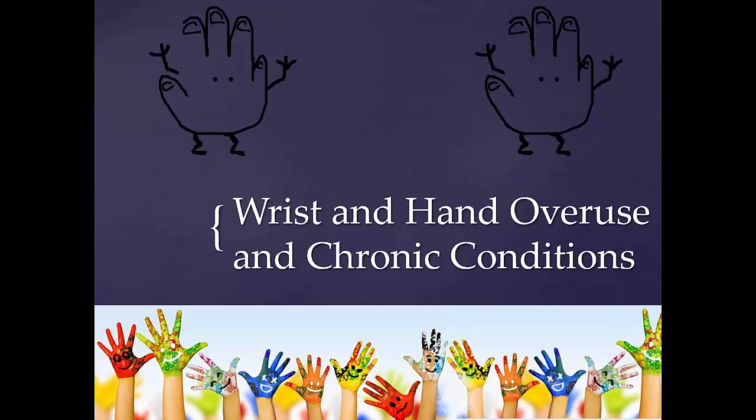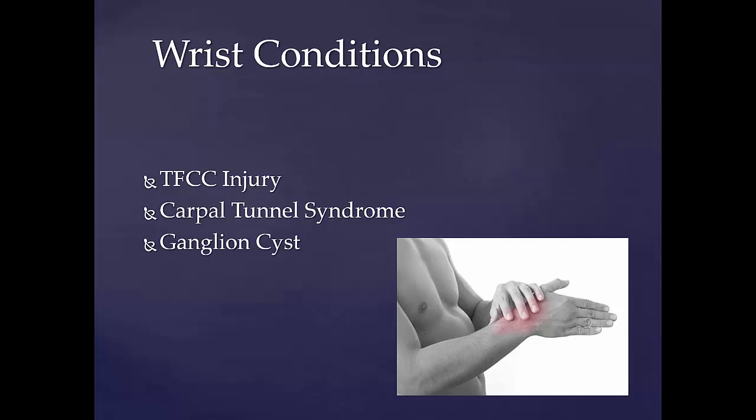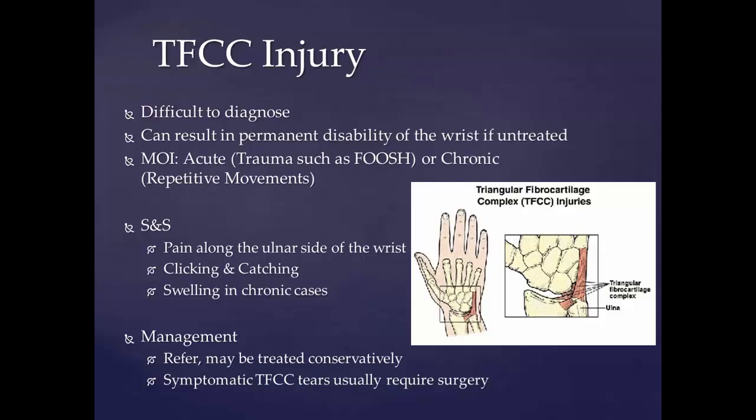Wrist and hand overuse and chronic conditions include TFCC injury, carpal tunnel syndrome, and ganglion cysts. The TFCC, or triangular fibrocartilage complex, has a substantial risk for injury and degeneration because of its anatomical complexity and multiple functions. Application of an extension pronation force to an axially loaded wrist, such as in a fall on